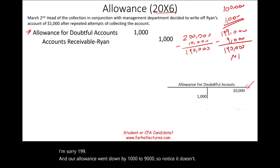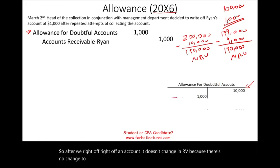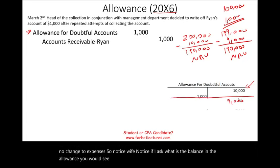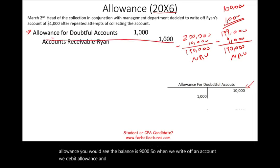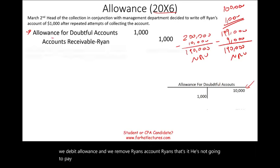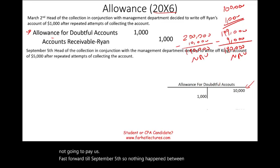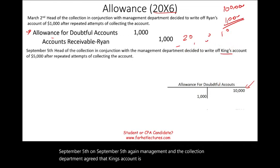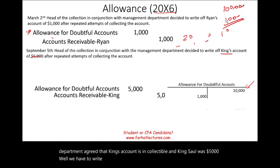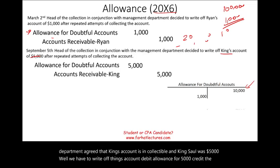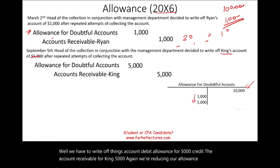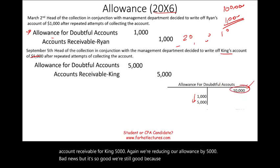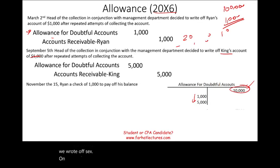On September 5th, management agreed that King's account is incollectible — King owes us $5,000. We debit allowance $5,000 and credit account receivable — King $5,000. Our allowance is now reduced to $4,000. On November 15th, Ryan sent a check of $1,000 to pay off his balance. Since we wrote off Ryan's account, we must first reinstate it: debit account receivable — Ryan $1,000, credit allowance $1,000. Then we accept the cash: debit cash, credit account receivable — Ryan.